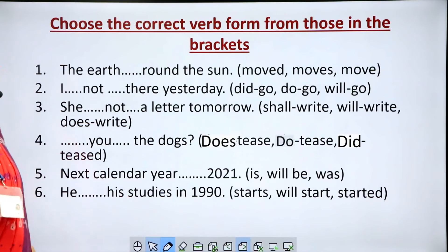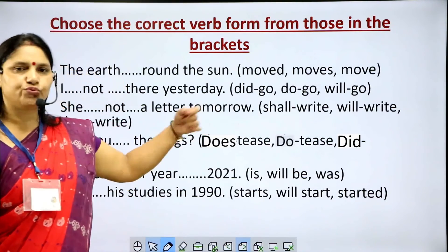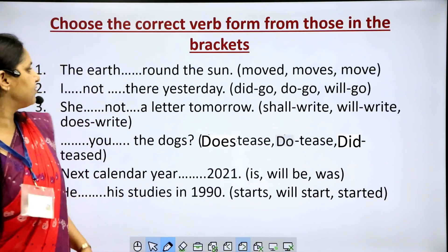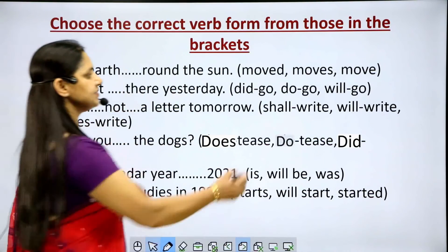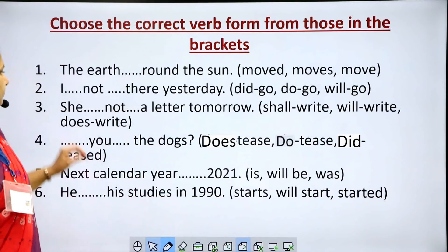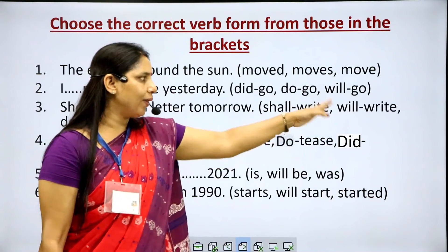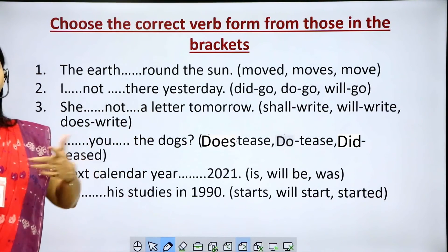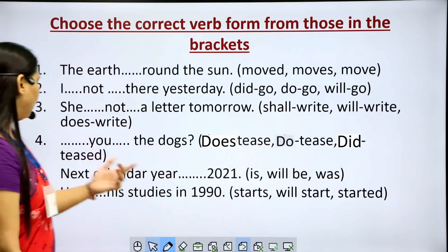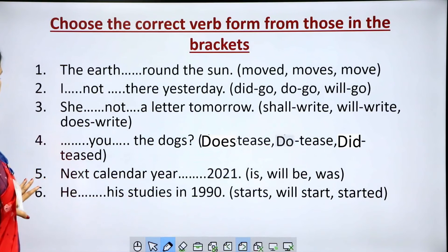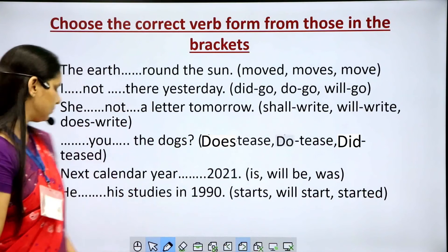Now here are some questions. Choose the correct verb form from those in the brackets. First: 'The earth ___ round the sun.' Options: moved, moves, move. Second: 'I ___ not ___ there yesterday.' Options: did go, do go, or will go. Third: 'She ___ not write a letter tomorrow.' Options: shall write, will write, does write. Fourth: '___ you ___ the dogs?' Options: does tease, do tease, or did teased. Fifth: 'Next calendar year ___ 2021.' Options: is, will be, or was. Sixth: 'He ___ his studies in 1990.' Options: starts, will start, or started.